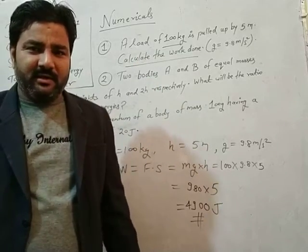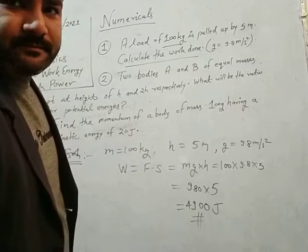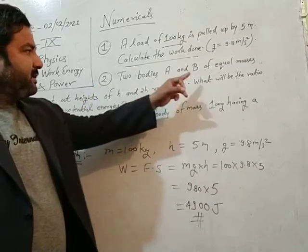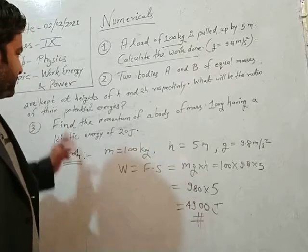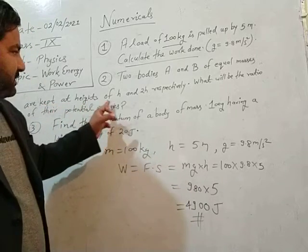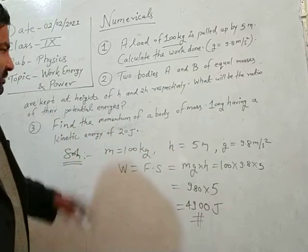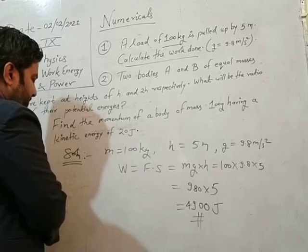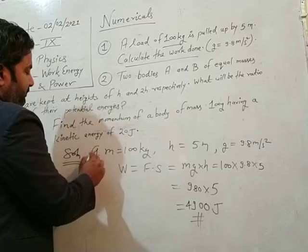Then after this, let's note down second one. Two bodies A and B of equal masses are kept at heights of h and 2h respectively. What would be the ratio of their potential energy?